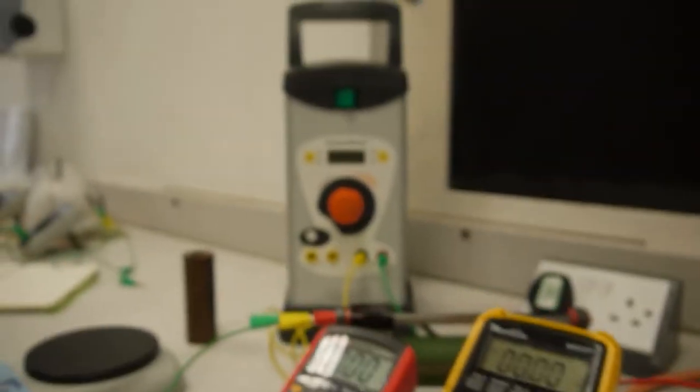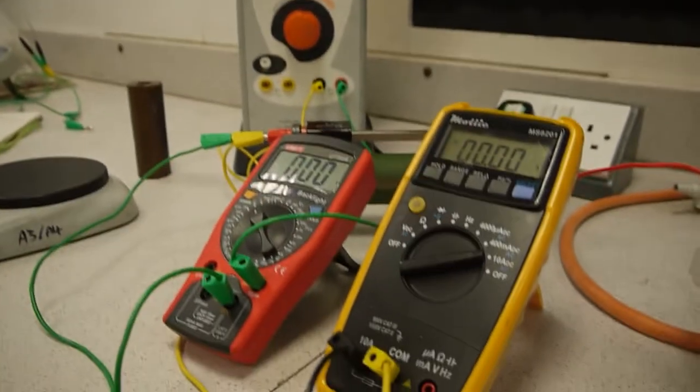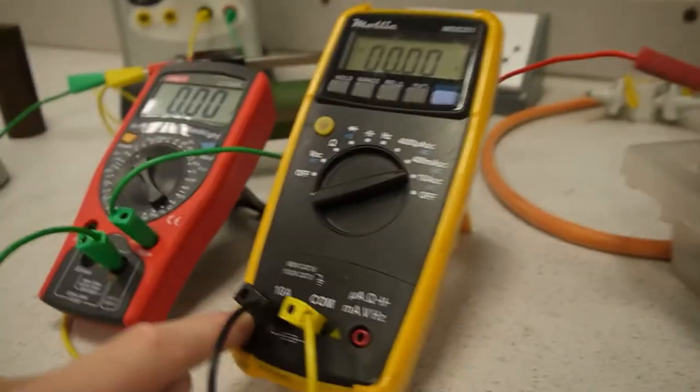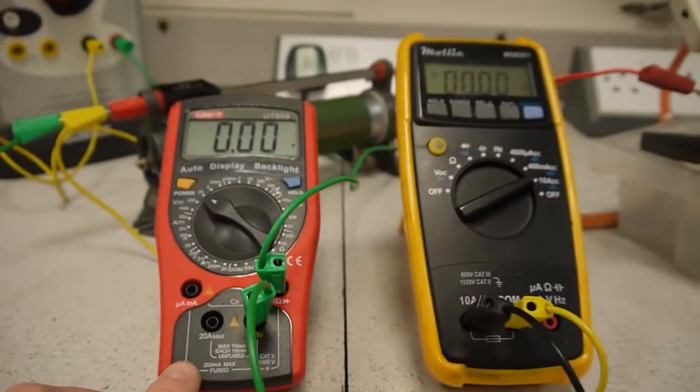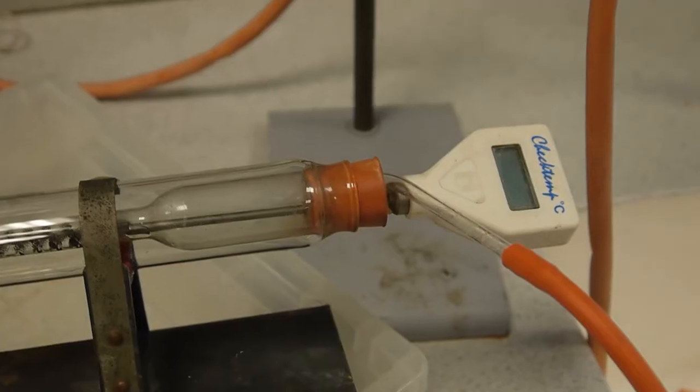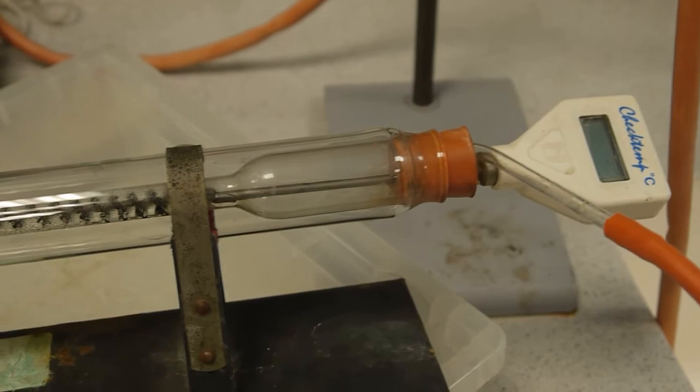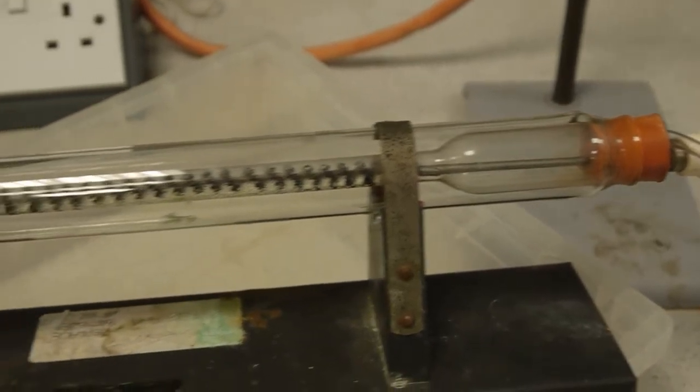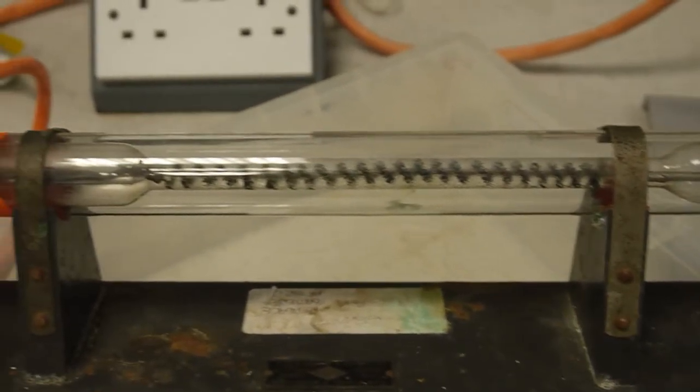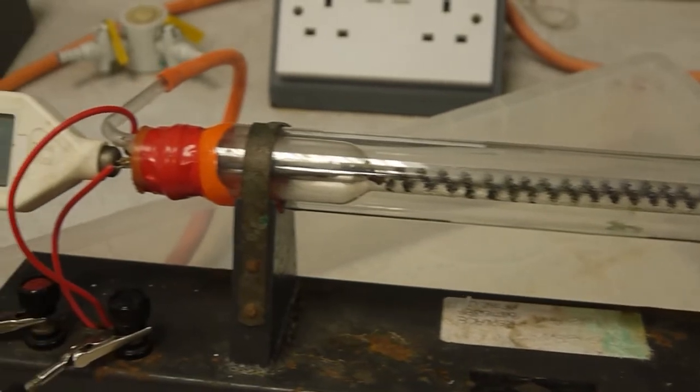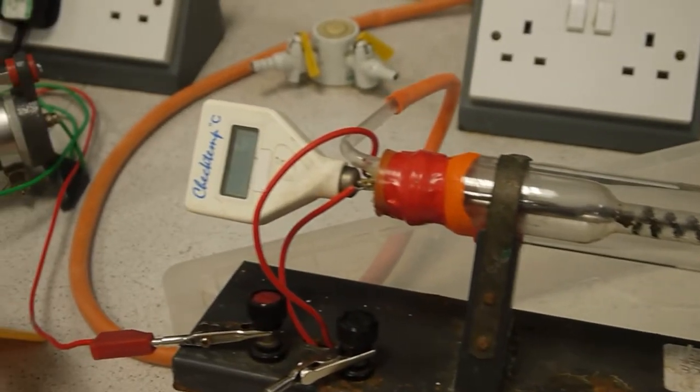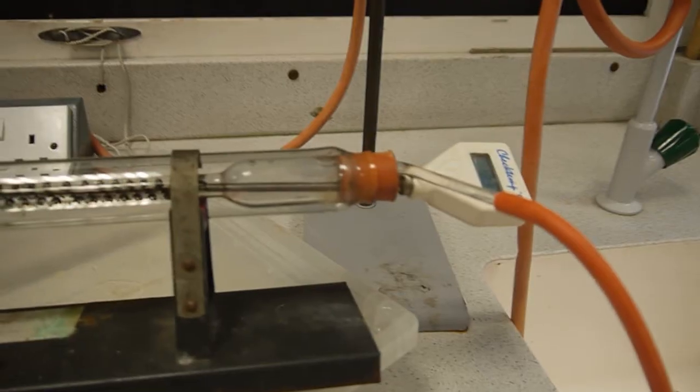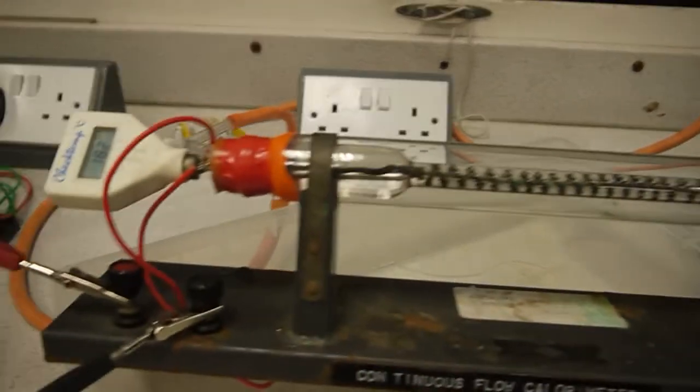That is powered by this power supply, and we have over here an ammeter and a voltmeter for measuring the power supply to the heater. So this method is designed to help eradicate inefficiencies and energy losses, such as heat loss to the environment, by allowing us to heat the water at two different rates and bring it up to the same temperature.